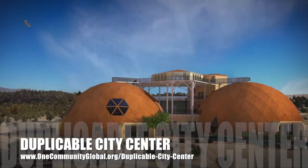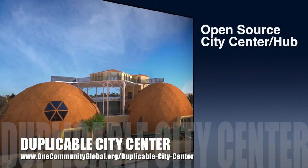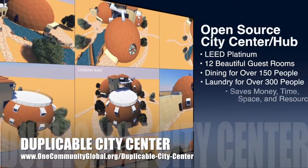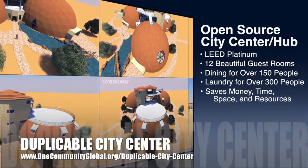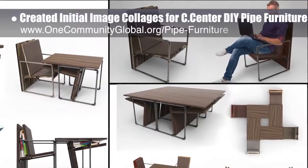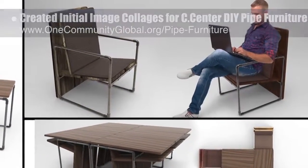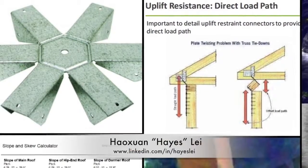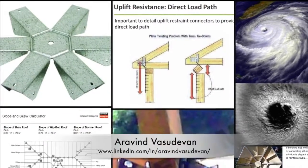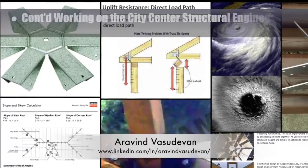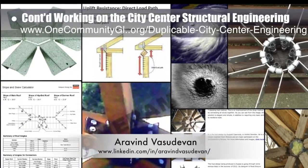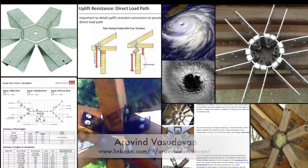One Community is also creating an open source duplicable city center designed to be LEED Platinum certified, provide 12 guest rooms, dining for over 150 people, and laundry and recreation space for over 300 people — all while saving money, time, space, and resources. This week the core team created initial image collages for the City Center DIY pipe furniture tutorial. Hayes Lay, structural engineer, Shunini with a Masters of Mechanical and Civil Engineering PhD, and Erevan Vasudevan, BA Mechanical Engineering, continued work on City Center structural engineering — this week focusing on wind load calculations, roof design updates, and exploring wood connections and a wood frame option to replace the original steel plan.